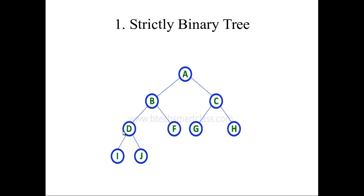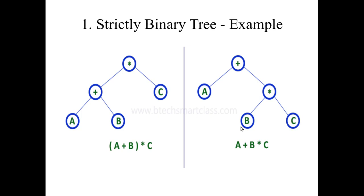If you look at this diagram, A node is having two children B and C. Similarly, B node is also having two children D and F. D is having children I and J. F doesn't have any children — zero children. C node is also having G and H; G and H don't have any children. So the condition is it should have either two children or zero children, and this is called a strictly binary tree. This is another example using a mathematical expression where each node has two children or none — so this is also a strictly binary tree.